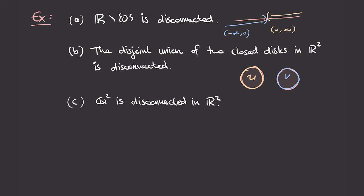A subset of a subspace is open in the subspace topology if it's the intersection of the entire space with some open set of the larger space. To show U is open in the subspace topology, we find an open subset of ℝ² — the open ball slightly larger than the closed disk U — whose intersection with the subspace is precisely U. This shows U is open in the subspace topology. A similar argument works for V, and hence we've decomposed our space into two non-empty disjoint open subsets, showing it is disconnected.